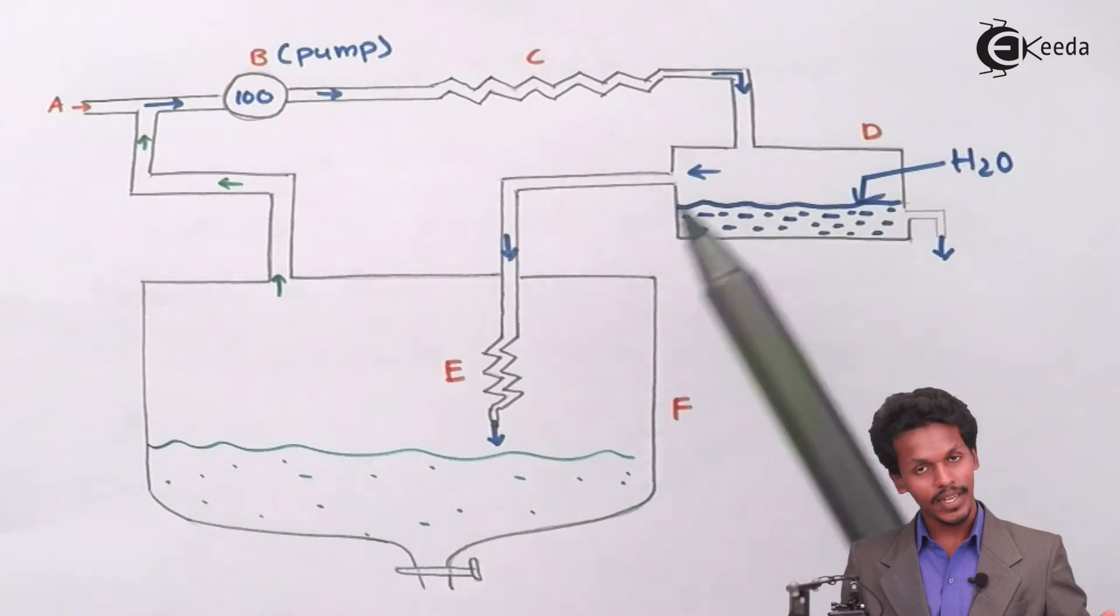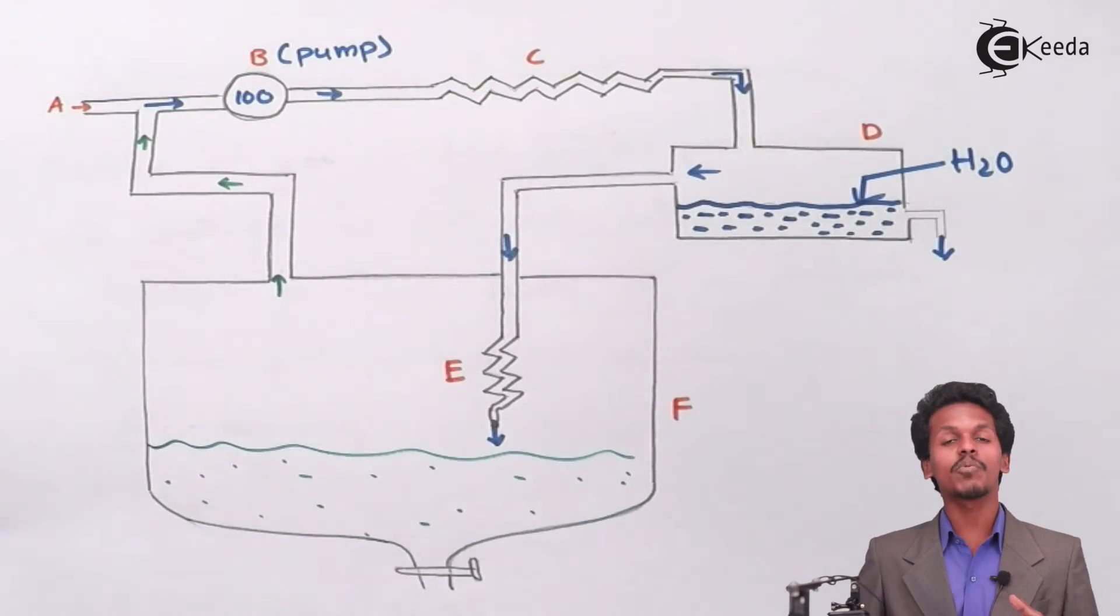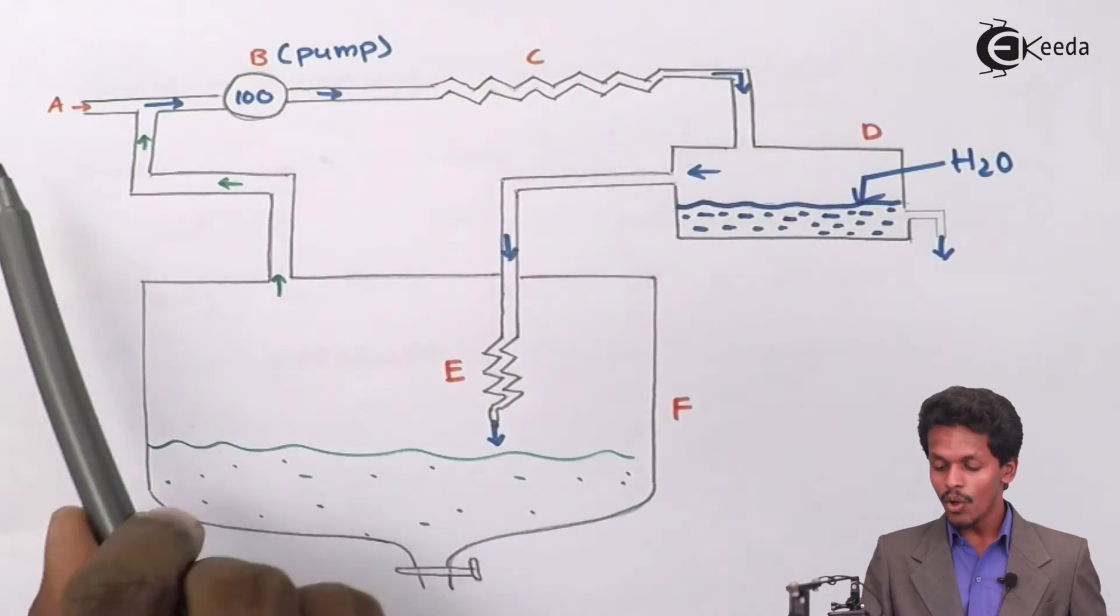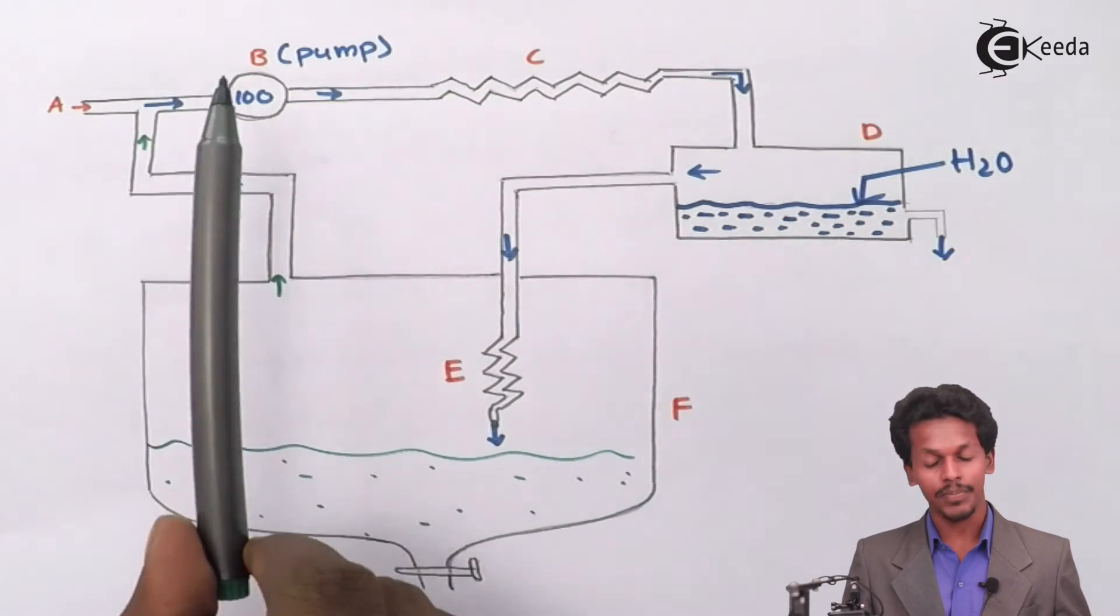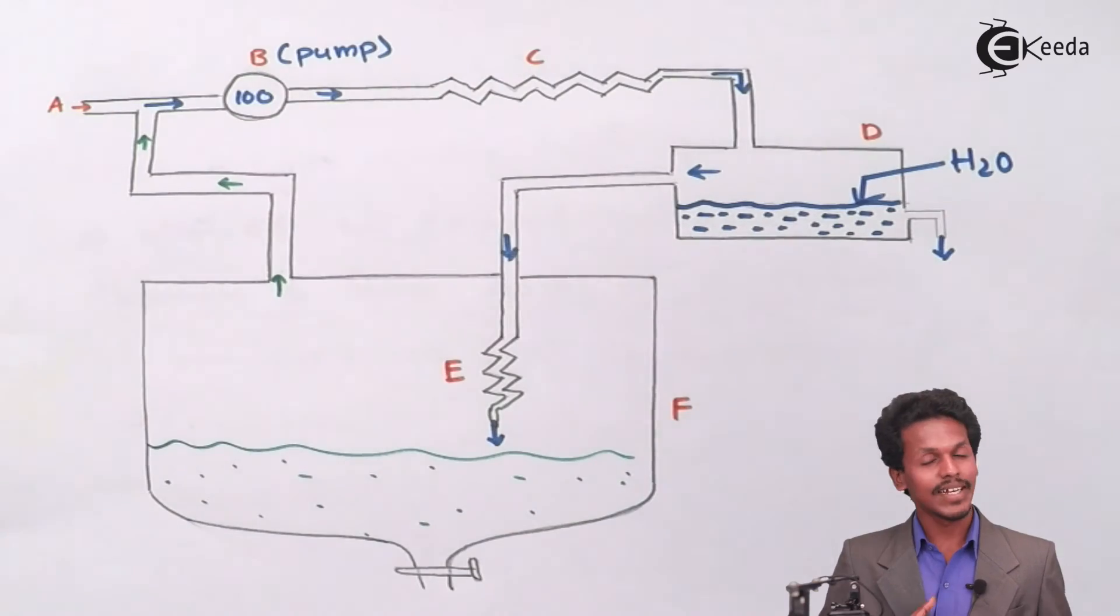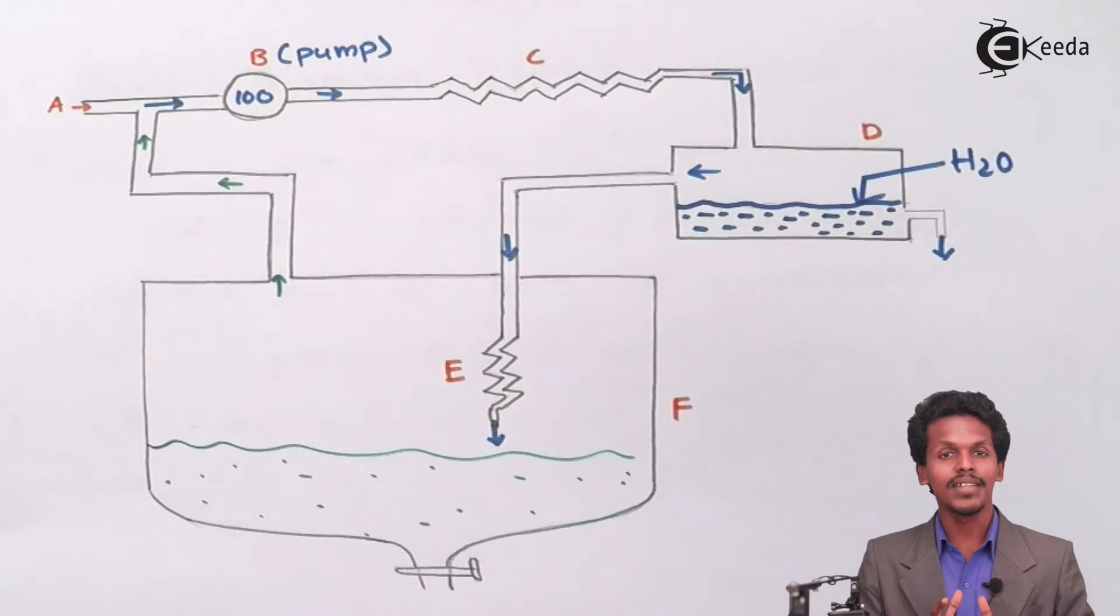If the flask is not containing all the liquefied air, the air will again enter in this tube. This air will again be accompanied by the 100 atmospheric pressure of this pump. The pump will allow the 100 atmospheric pressure to the air. Again the air will be passed through this coil known as C, again it will pass through D. This process will go on continuing until all the air that we have passed will be liquefied.